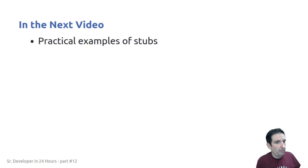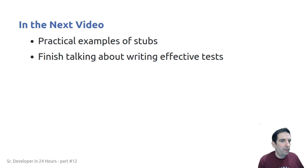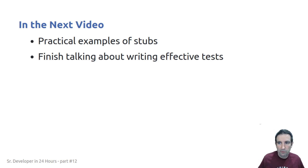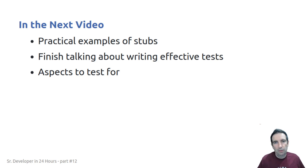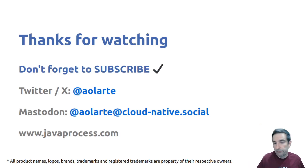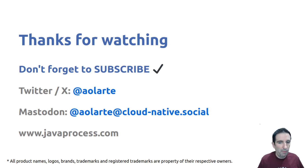In the next video we're going to look at two different examples of how we can implement stubs, finish talking about the steps to write effective integration tests, and talk about the different aspects we can be testing for in our integration tests. Once we've built up all of this infrastructure there's a lot we can test — we can reuse it and make it bigger, better, and more useful for our development life cycle. With that said, thank you for watching. Don't forget to subscribe. You can follow me on Twitter or X, on Mastodon, or check out my webpage at javaprocess.com. Thank you, and see you next week.